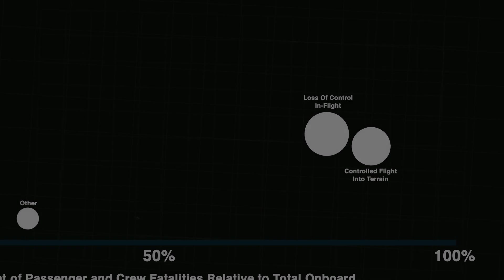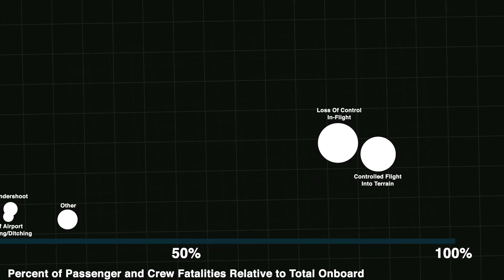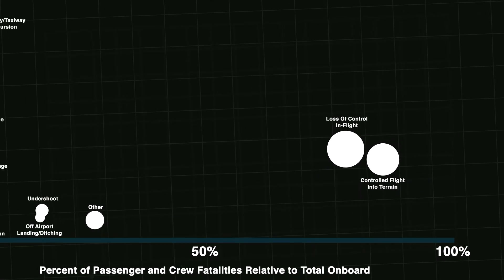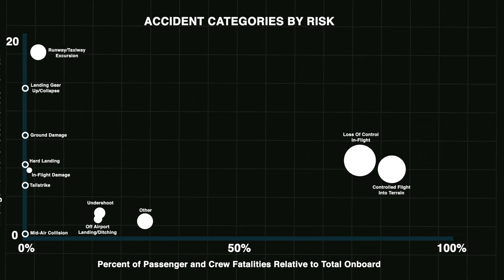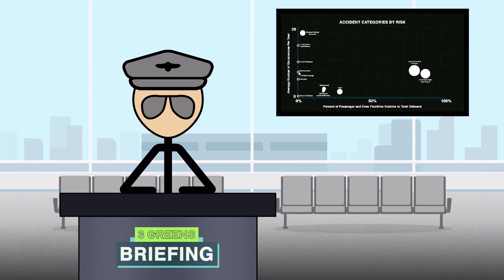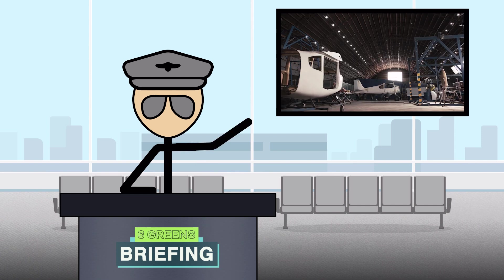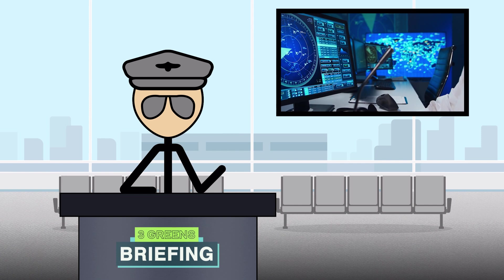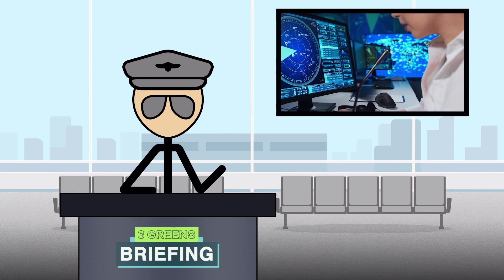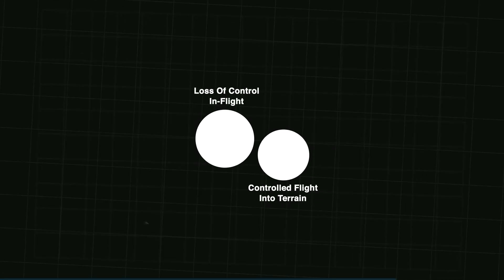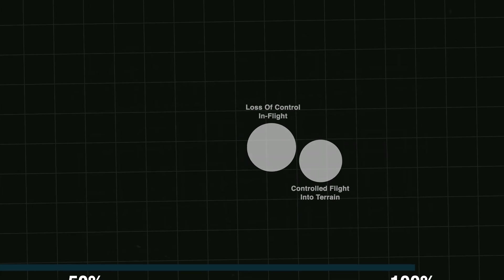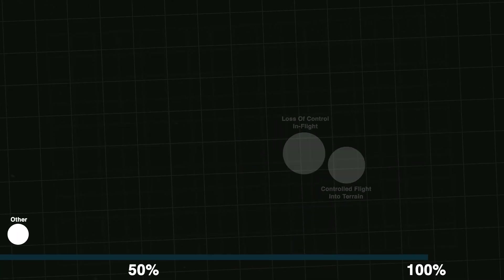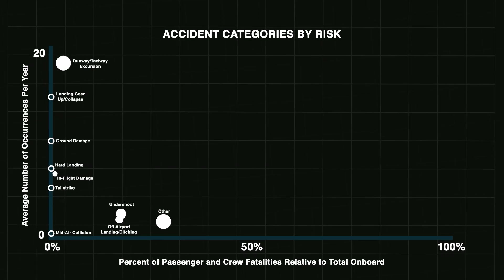When controlled flight into terrain or loss of control in flight occur, they are way more deadly than any other accident type. So this is where the focus of aviation safety is. Just as it's been on the reliability of aircraft themselves and management of air traffic in the past, if these bubbles can be burst, then aviation will be even safer than ever before.